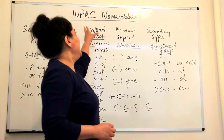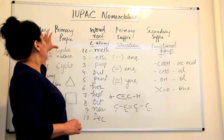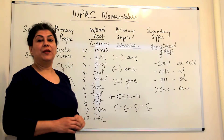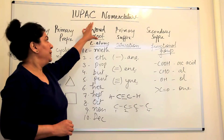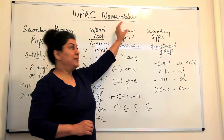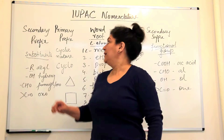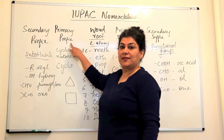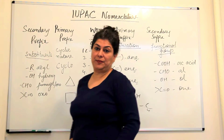The IUPAC name of a hydrocarbon consists of five parts: the word root, the primary suffix, the secondary suffix, the primary prefix, and the secondary prefix.